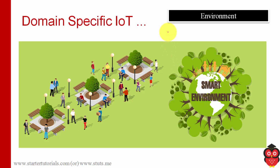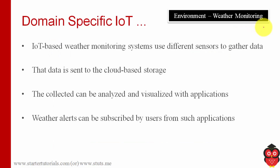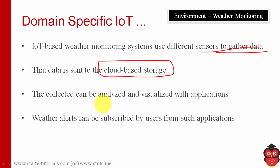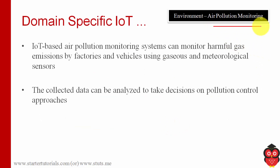The next domain is environment. The first application is weather monitoring: weather monitoring nodes with different sensors are deployed across different areas to gather data. The data is stored in cloud-based storage, analyzed, and visualized through mobile or desktop applications, and alerts can be sent to subscribed users. The next application is air pollution monitoring — smoke and gas detectors can be installed across different regions, and data from those sensors can be aggregated and analyzed for making decisions on pollution control approaches.